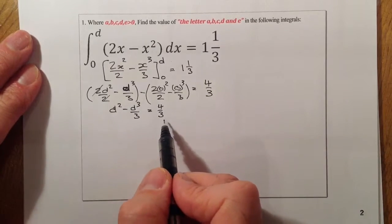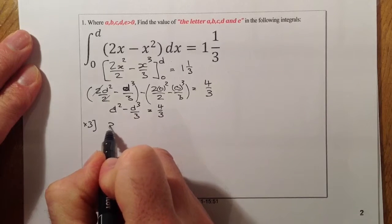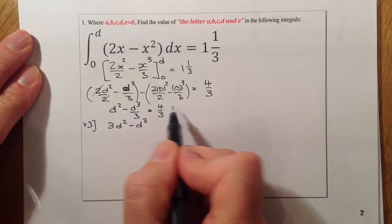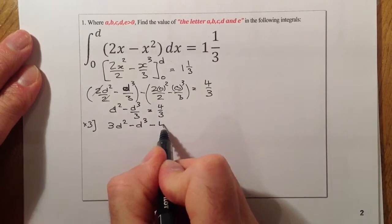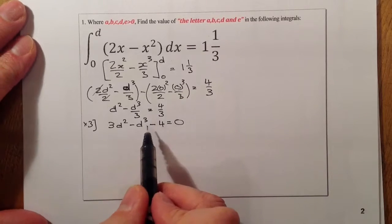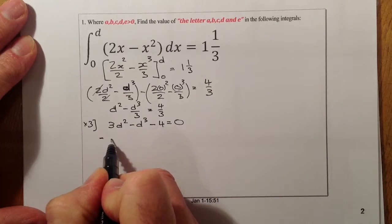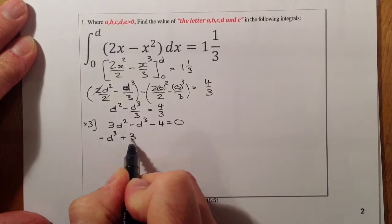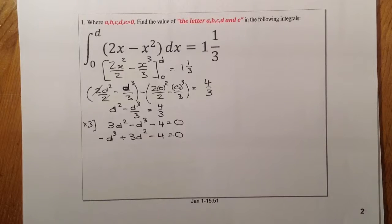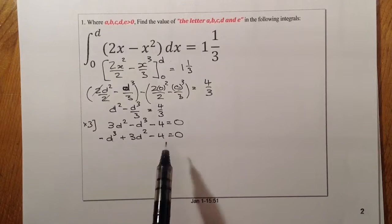Multiplying by 3 throughout to get rid of the fractions gives 3D squared minus D cubed, minus 4 equals 0. Reordering with the highest power first: minus D cubed plus 3D squared minus 4 equals 0. To solve this polynomial I'm going to use synthetic division. Let me try a couple of values — I'll try 1 first of all, a bit of trial and error.